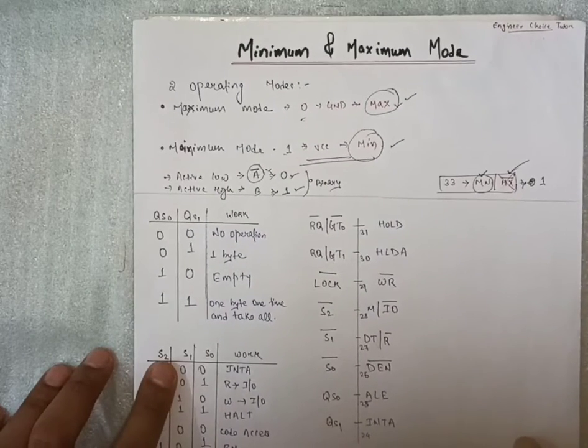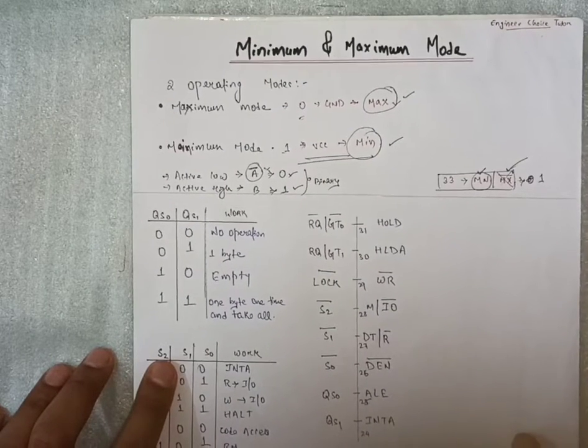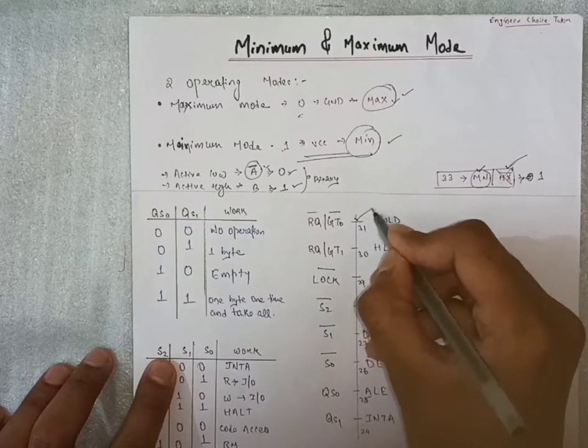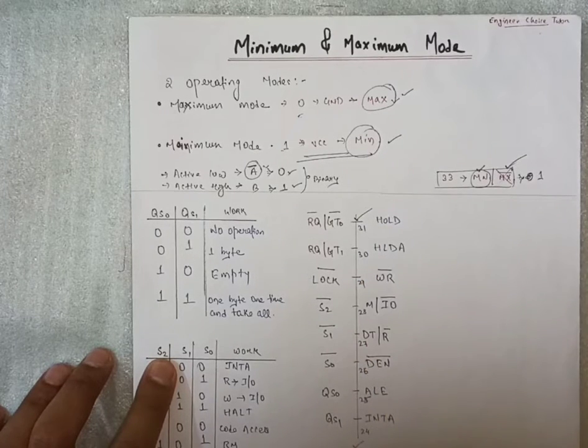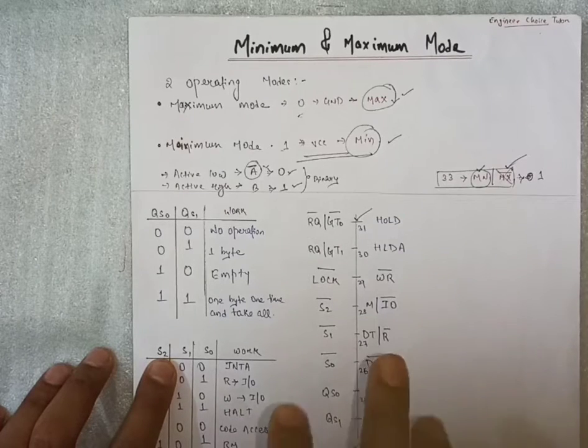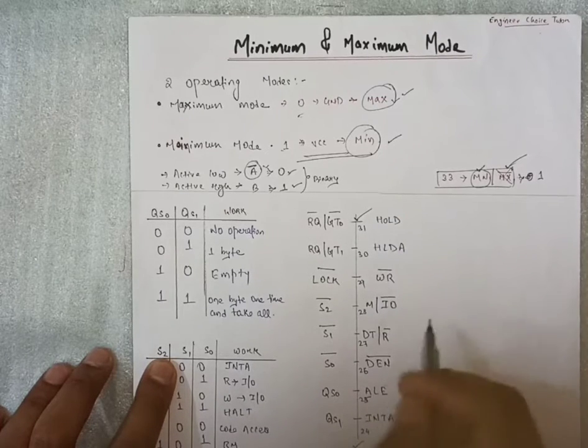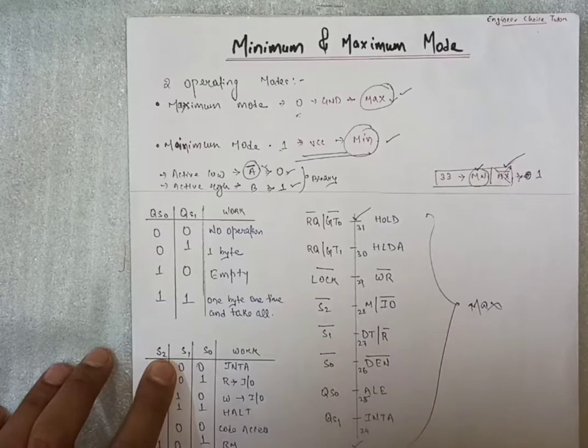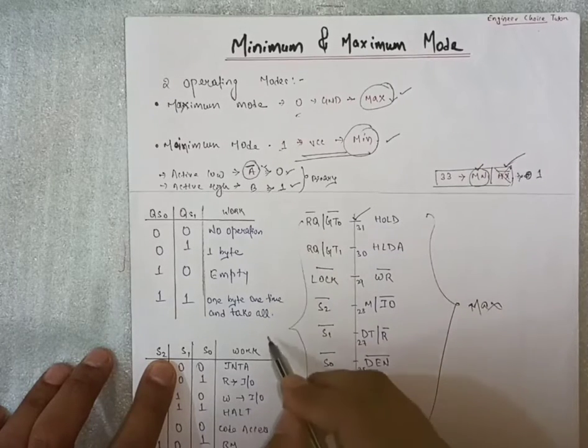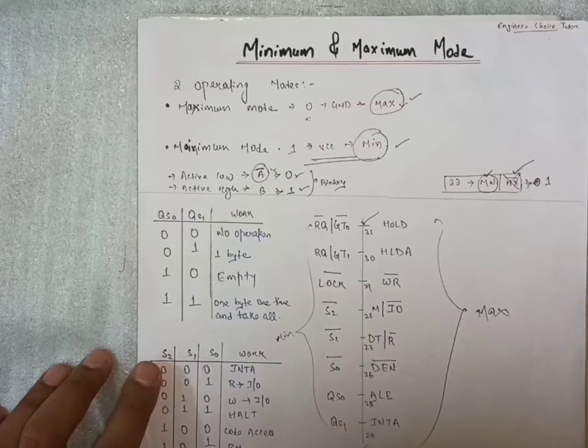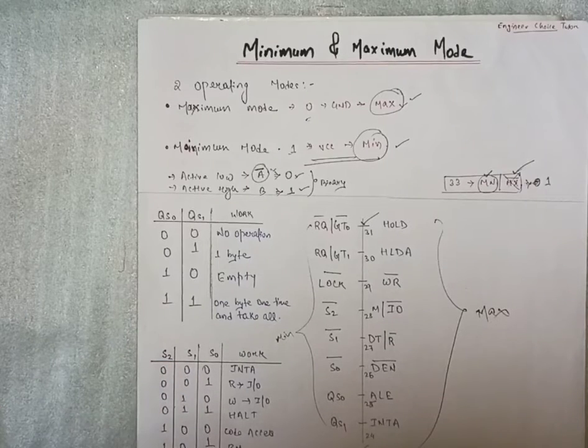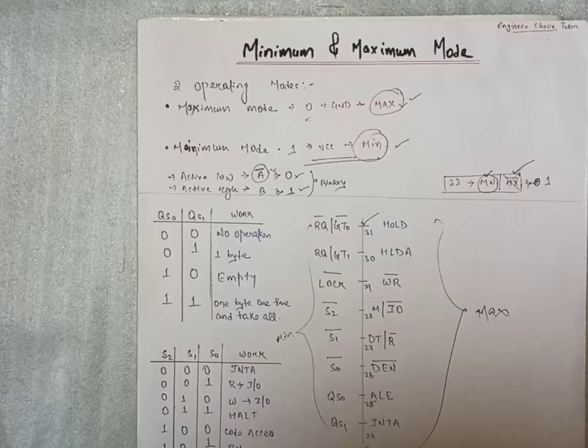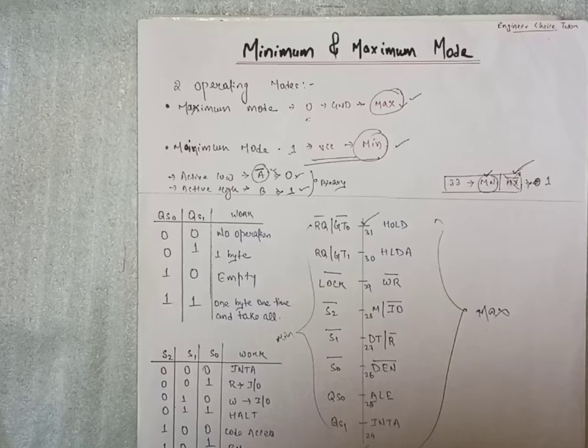In the pin sequence of 8086, you can go to previous video and also see that from pin number 31 to 24, all pins have to work. The right side is going to work in maximum mode and the left side is going to work in minimum mode. So let's see one by one what these pins are doing, what the function of all these pins.